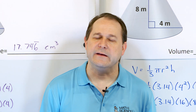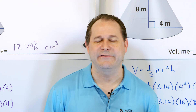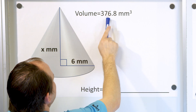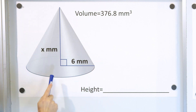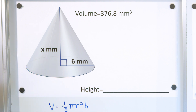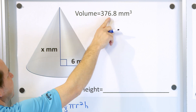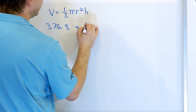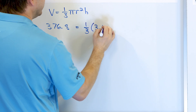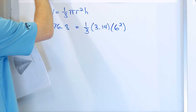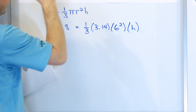We have one more problem, and this last one is a little different. We have a cone, but this time I'm giving you the volume ahead of time — 376.8 cubic millimeters — and asking you to find the height. So we're going backwards. Using the same equation, the volume of a cone equals one-third pi r squared h. We put in what we know: 376.8 equals one-third times 3.14 times the radius, which is 6, so 6 squared, times the height h.